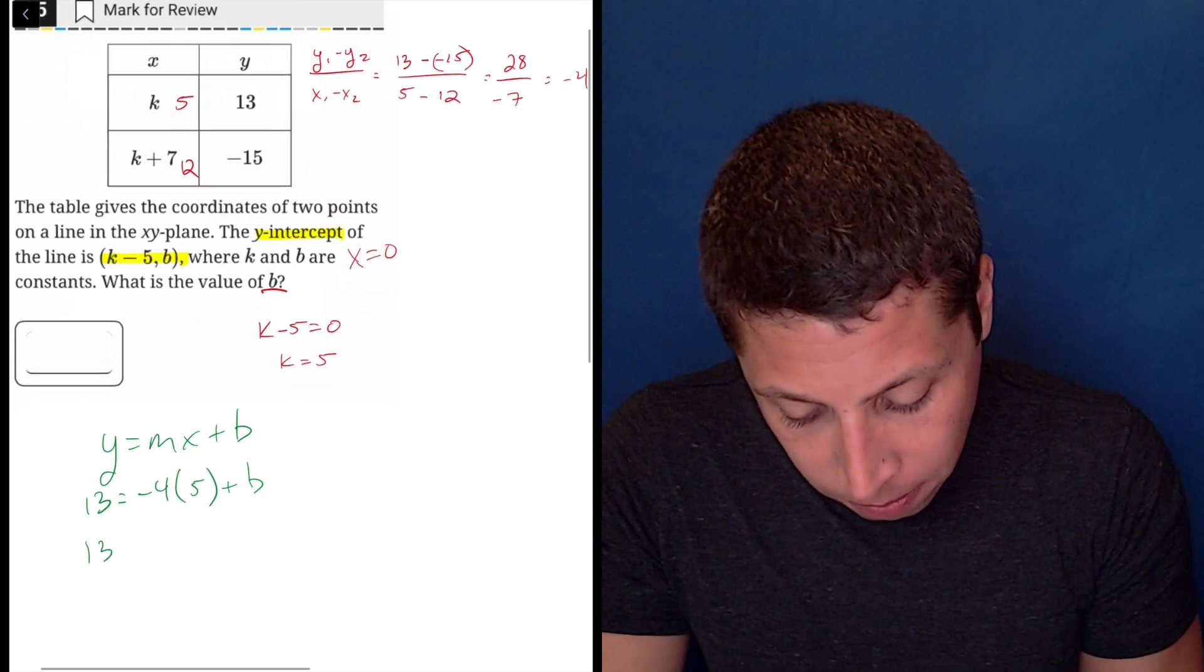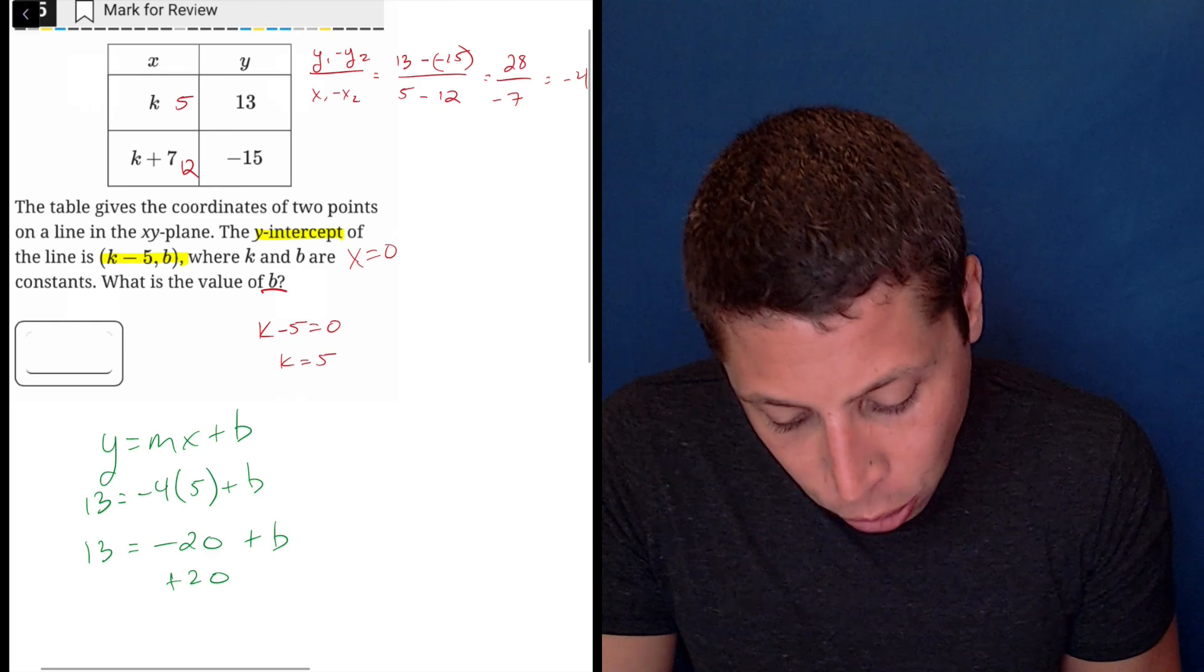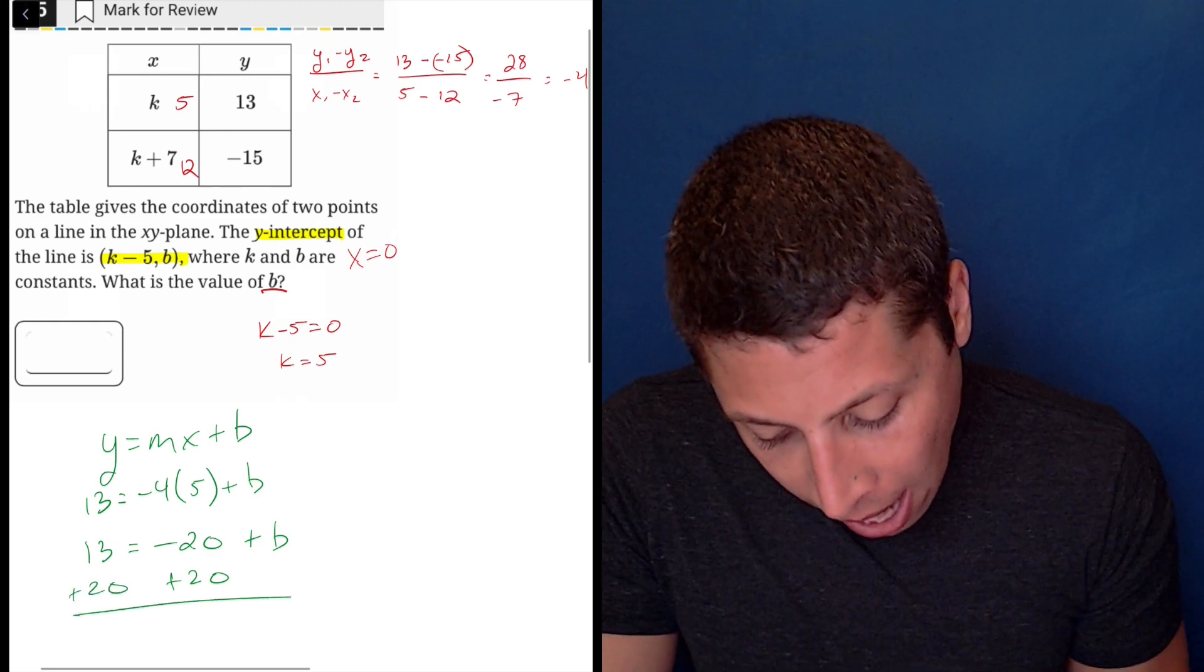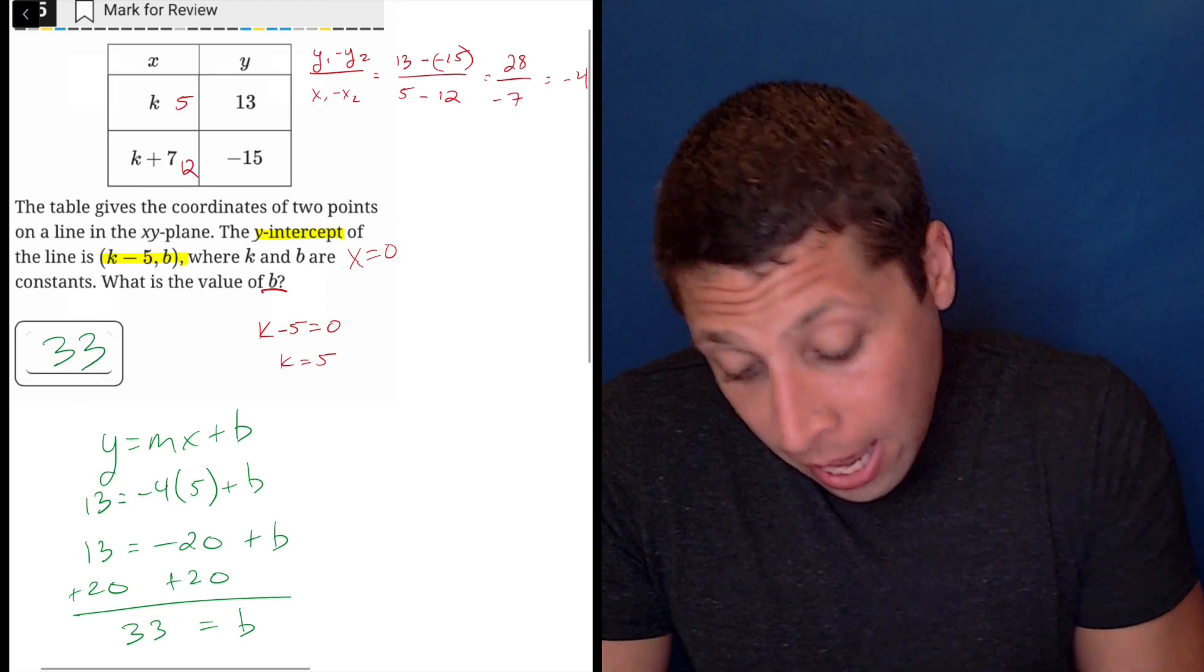So 13 is equal to negative 20 plus b. Let's add 20 to both sides and we get that 33 is equal to b. And that is the answer.